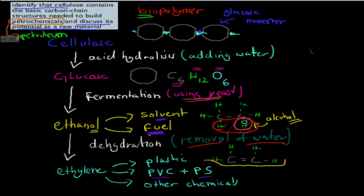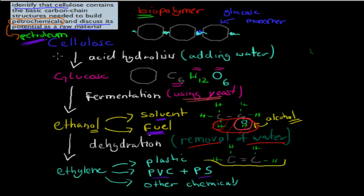We can also make other chemicals such as solvents and antiseptics from this. Ethylene is that basic structure that allows us to build all the other petrochemicals. So cellulose contains the basic carbon structures needed to build petrochemicals, meaning we can make the same petrochemicals from biomass as we can from petroleum.